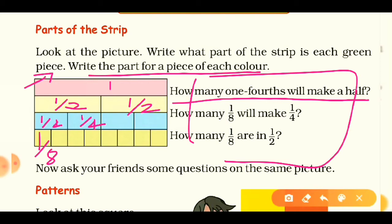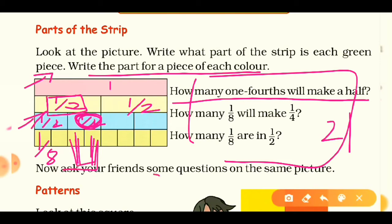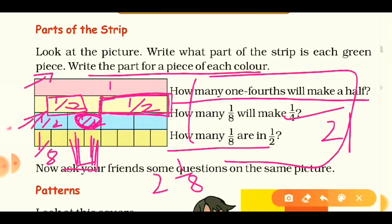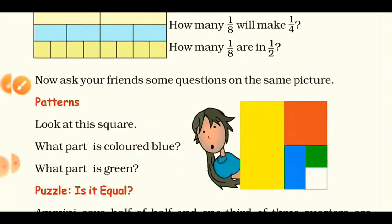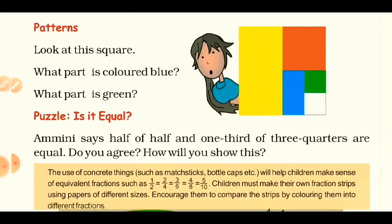The last strip is divided into eight equal parts — one, two, three, four, five, six, seven, eight — so each part is one upon eight. Now, how many one-fourths make a half? One half is divided into two one-fourths, so two one-fourths make a half. How many one-eighths make one-fourth? One-fourth is divided into two equal parts, so two one-eighths make one-fourth. And in one half there are four one-eighths.